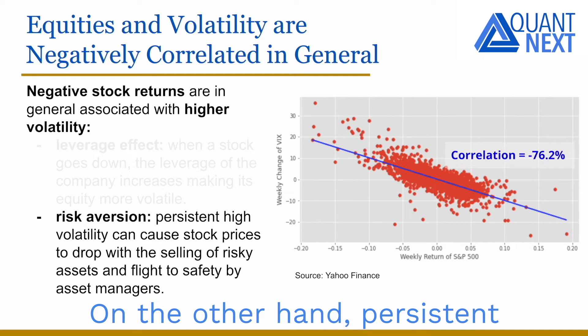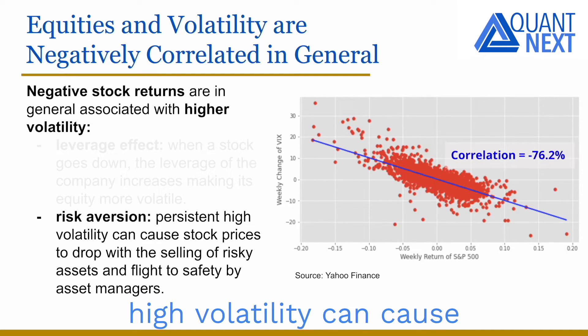On the other hand, persistent high volatility can cause stock prices to drop with the selling of risky assets and flight to quality by risk-averse investors.